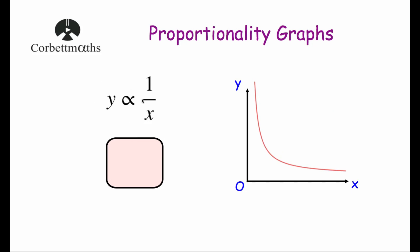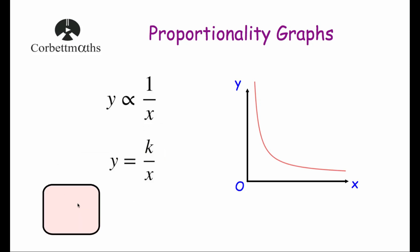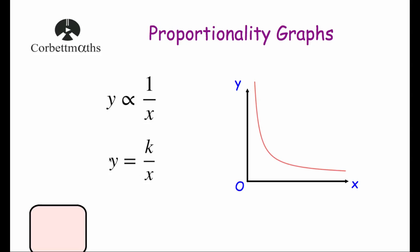Let's have a look at y is inversely proportional to x. If you watched the video on inverse proportion, that's where whenever x increases, y decreases. We can get rid of the proportionality symbol with an equals, and we multiply 1 over x by k, which gives us k over x. You may recognize this as a reciprocal graph, where you've got a number divided by x.